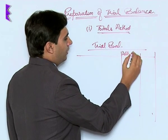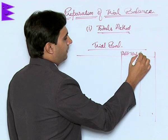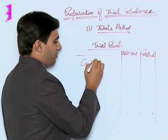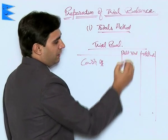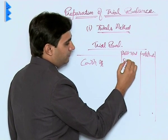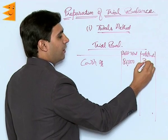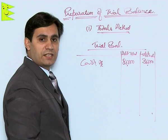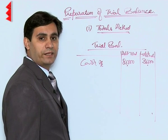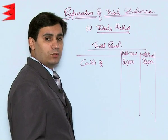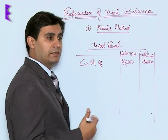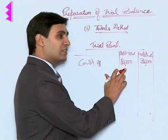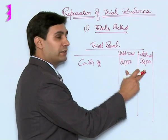The format shows debit total and credit total. For example, cash account has a debit side total of 80,000 and a credit side total of 30,000, so both totals are shown. Every transaction has two effects — debit and credit — so in some accounts it is recorded on the debit side and in others on the credit side. Both side totals are shown.